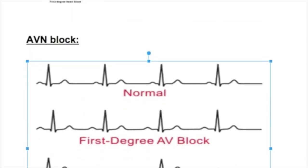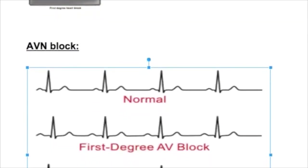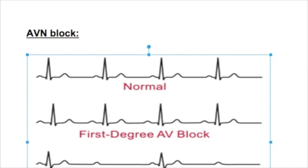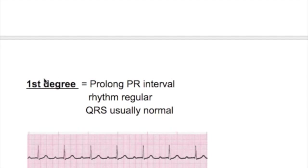AV nodal block has three types: first degree, second degree, and third degree block. In first degree block, there is a prolonged PR interval — the P and R interval is prolonged — and the rhythm is regular.